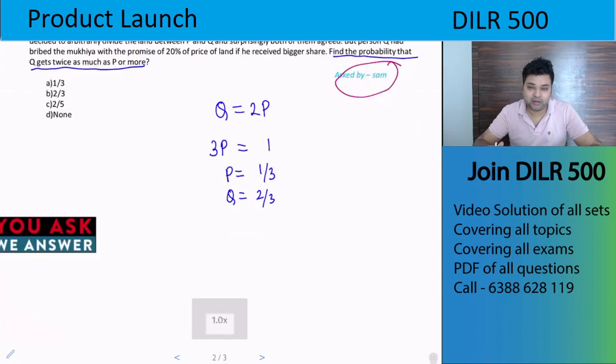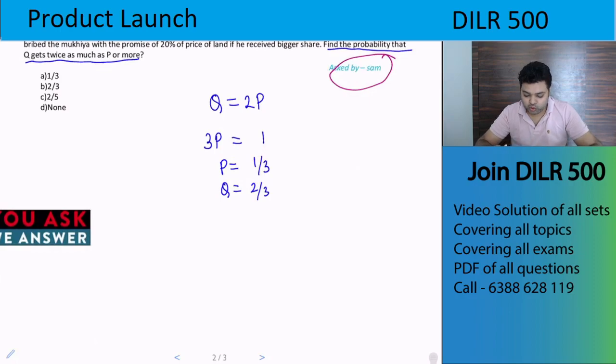Now, what does geometrical probability mean? In this, Q's value could be 2/3, or a bit more than 2/3, or a bit more, or a bit more, till one - anything is possible. So if we have a straight line, let's assume this is our land. So here is P and here is Q.